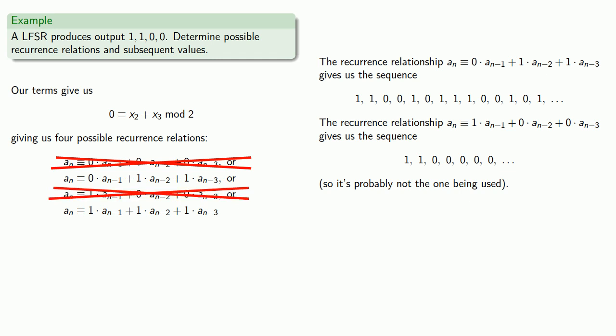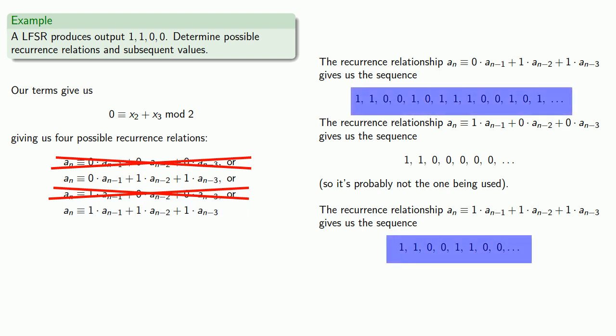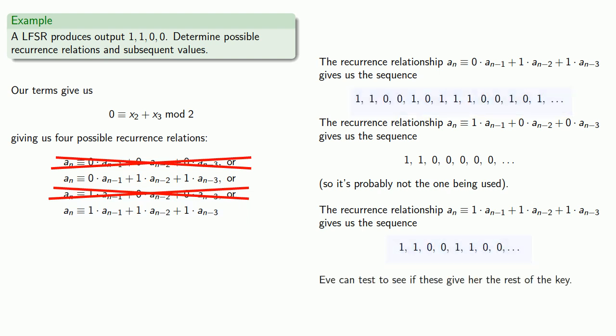And then finally, this last recurrence relation, an congruent to 1·an-1 + 1·an-2 + 1·an-3, is going to give us the sequence. And again, Eve now has two sequences, so she can test to see which one actually gives her the rest of the key. And if neither one works, she can assume the sequence is produced by a higher order recurrence relation and try those.